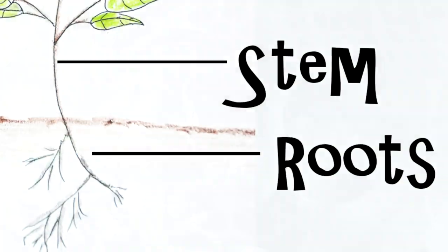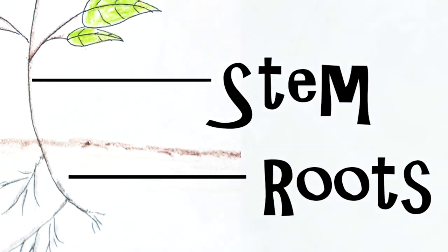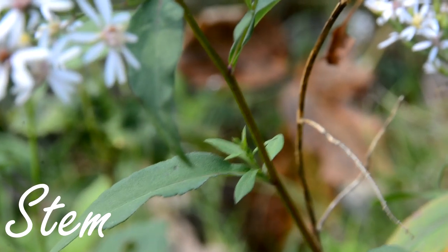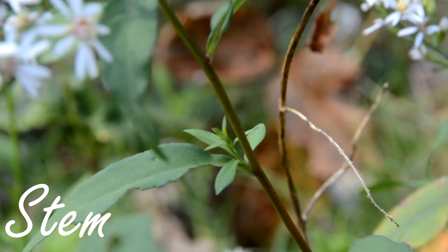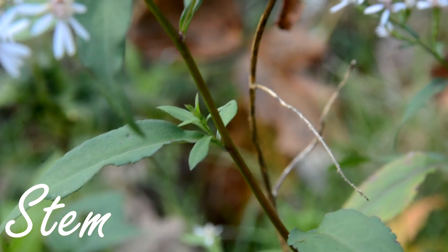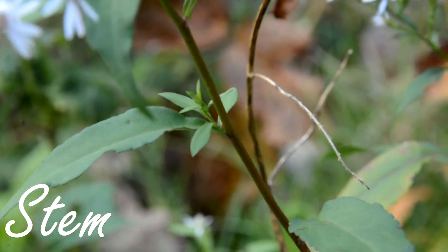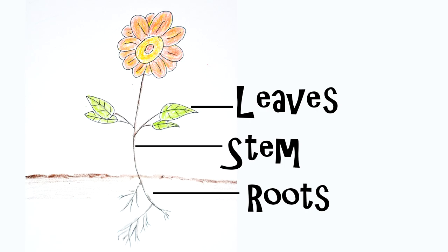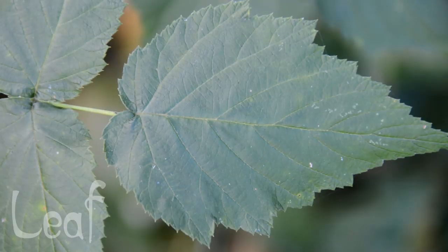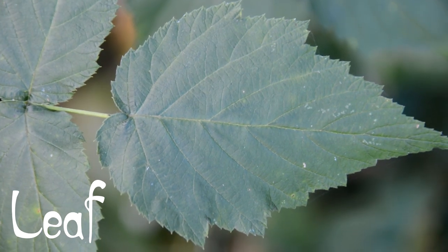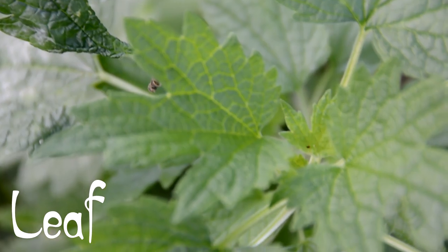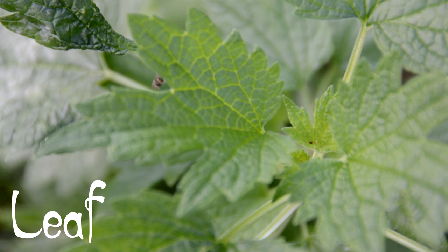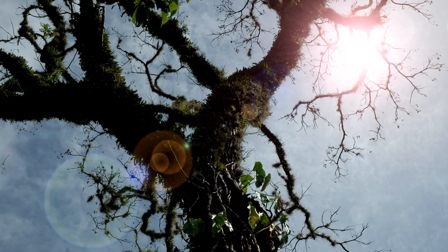The stem supports the plant and brings water up from the roots to the plant. The leaf's job is to make food for the plant. It gets its energy from the light of the Sun.